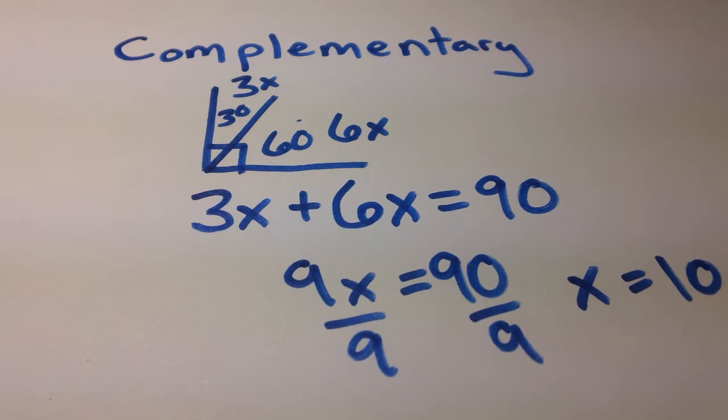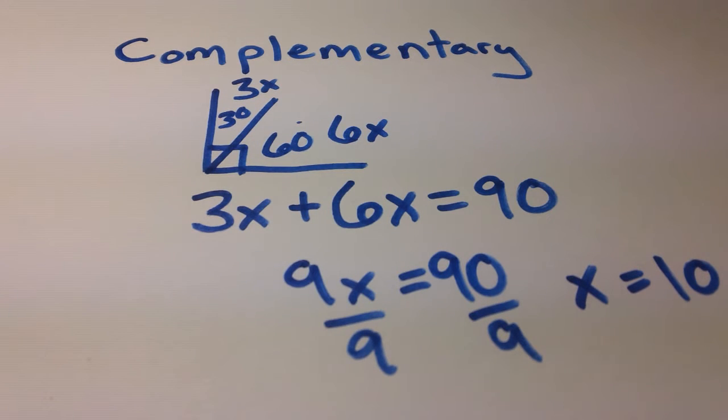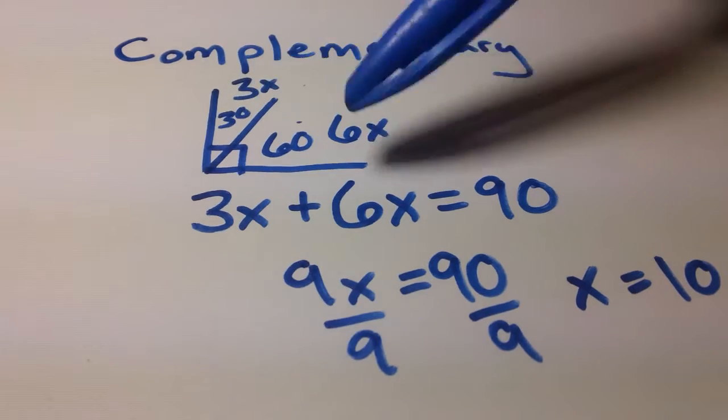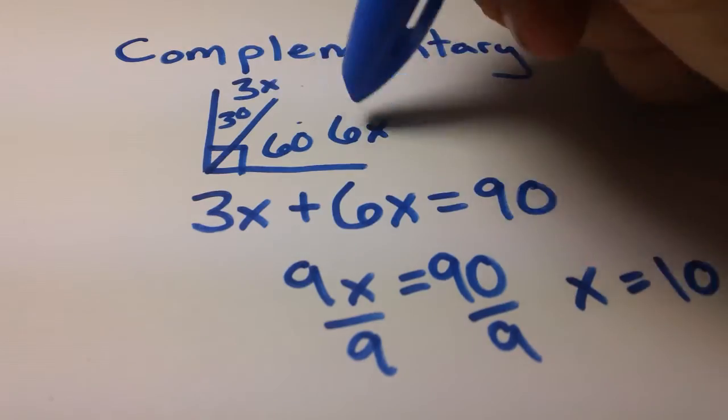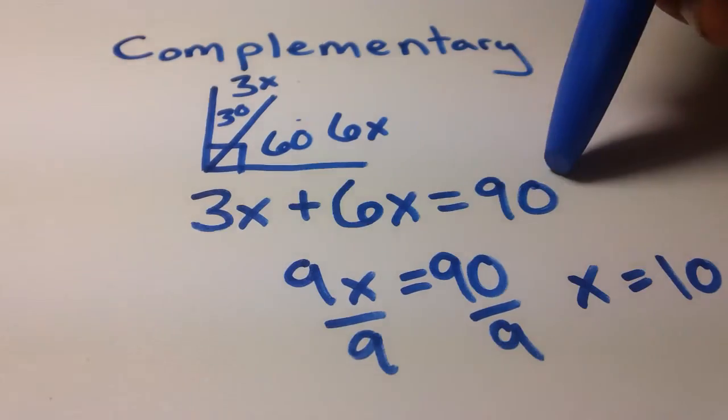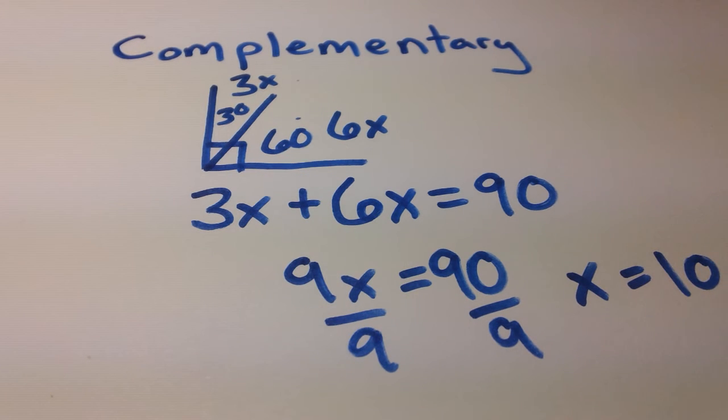Now of course that was a very simple problem. I mean that was practically as simple as the 60 and the 30 just on their own. But it does get harder. You get to having equations in place of these, but as long as you know this relationship that two complementary angles add to form 90 degrees, as long as you have that idea down, you're set with complementary angles. There's not a whole lot more to it, at least at this basic level.